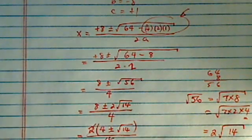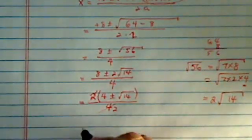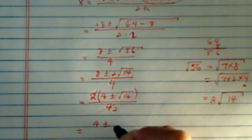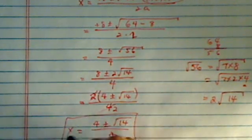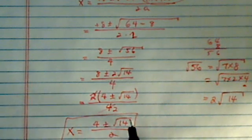Now from here, you see, I'm going to simplify and then I have a 2. So the answer is 4 plus minus radical 14 divided by 2. So this is x. So I have 2 roots. 4 plus radical 14 divided by 2 and 4 minus radical 14 over 2.